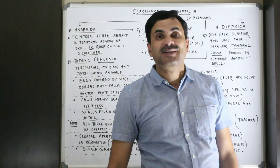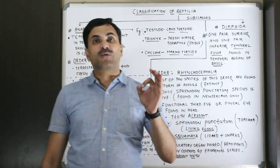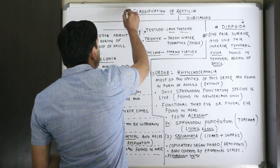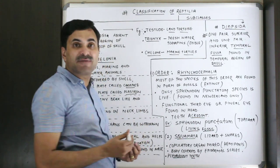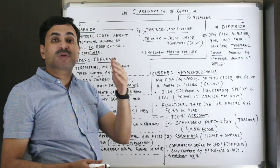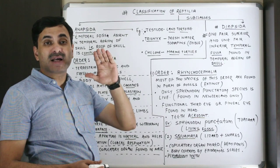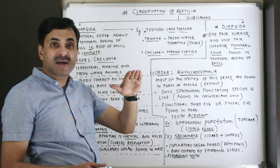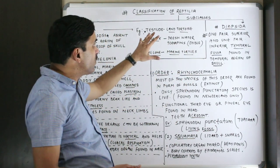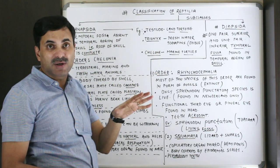Hello to all dear students. Today we will be discussing the classification of Class Reptilia. This class has been divided into two major subclasses. Though there may be more subclasses, the others are not useful because all their members have become extinct. We will deal only with subclasses of Class Reptilia that have living members available.